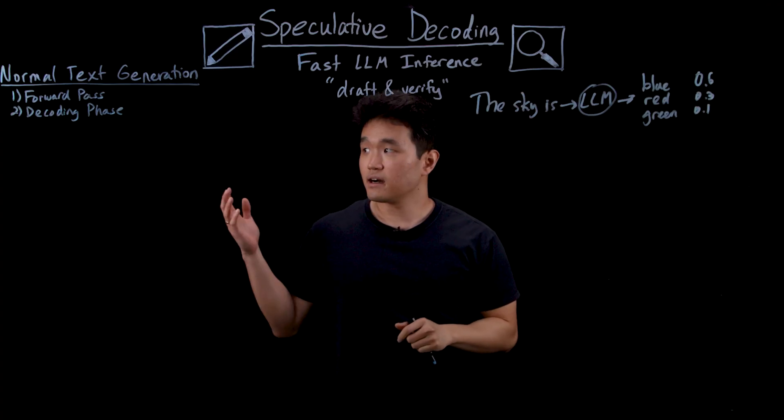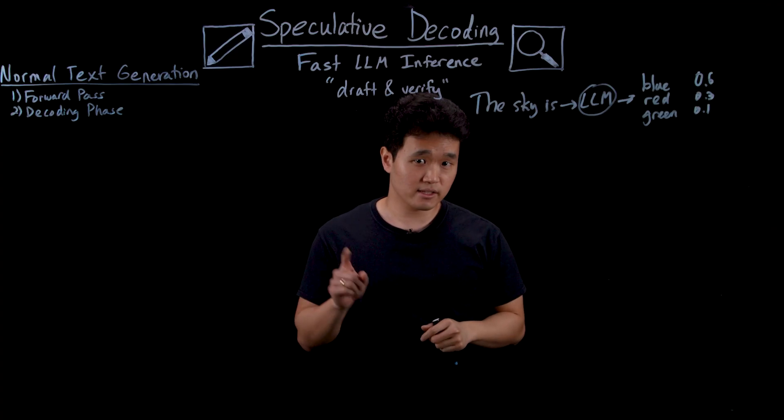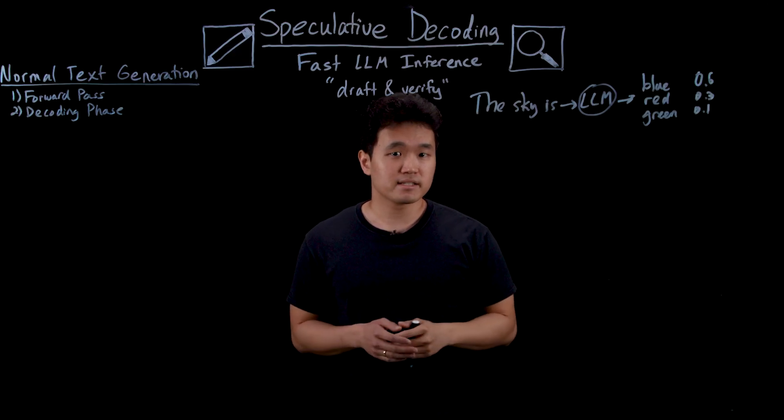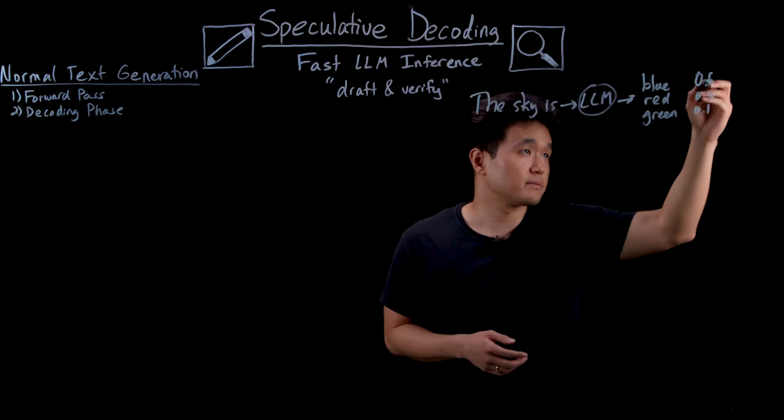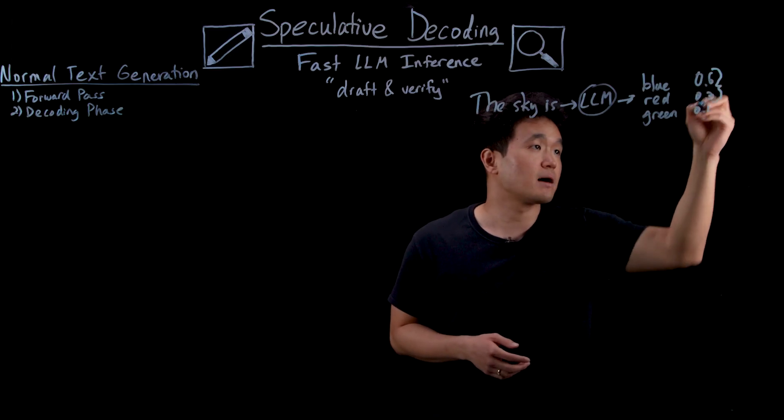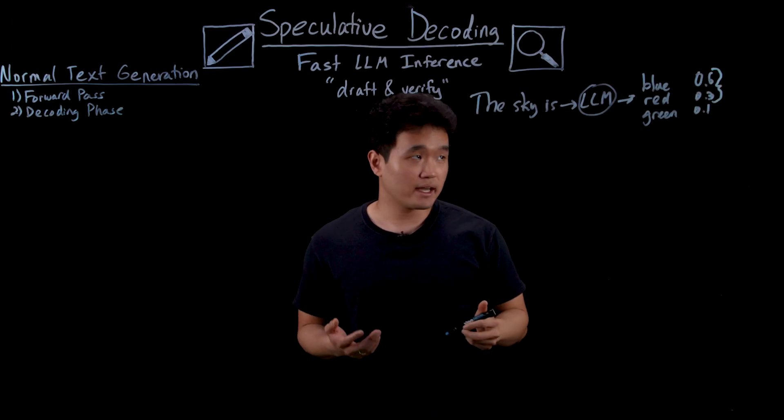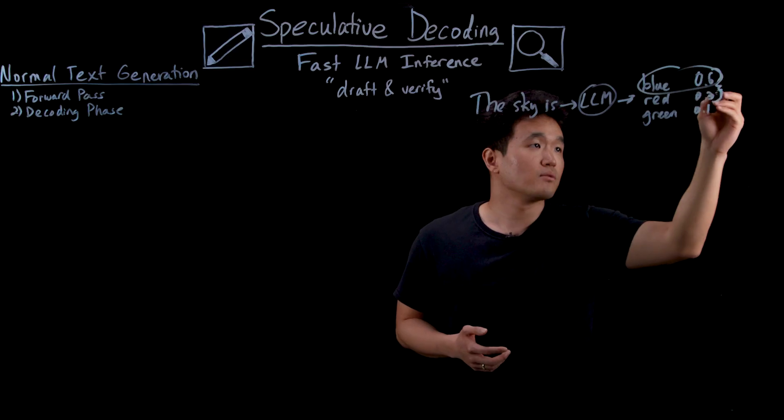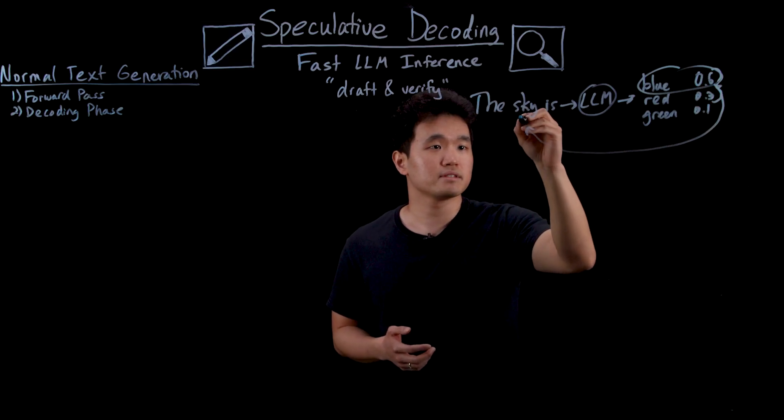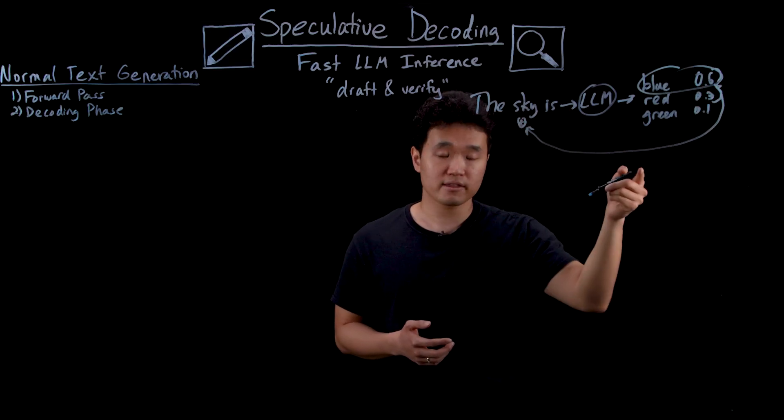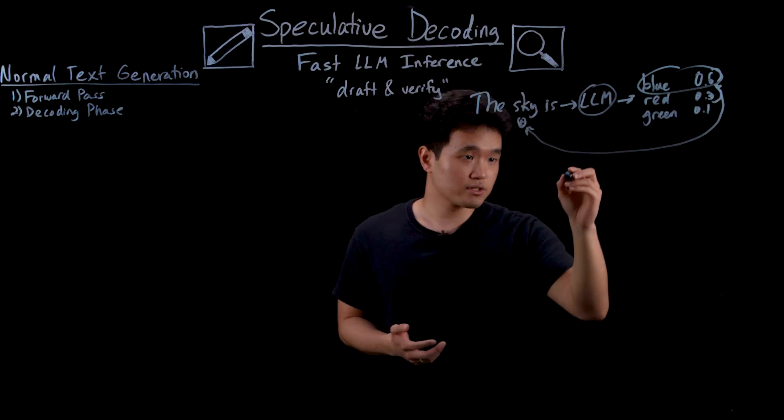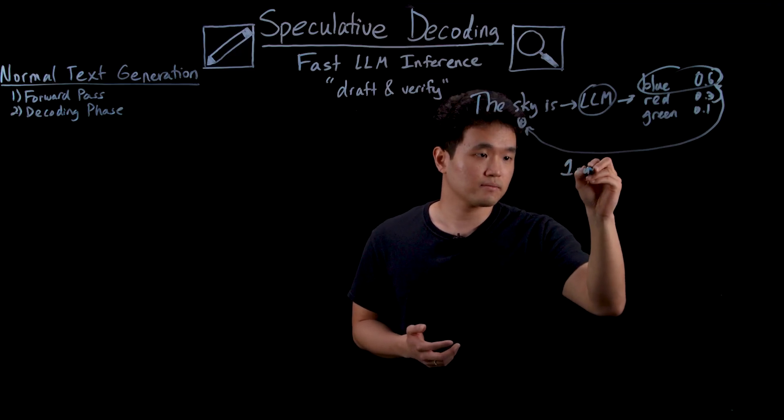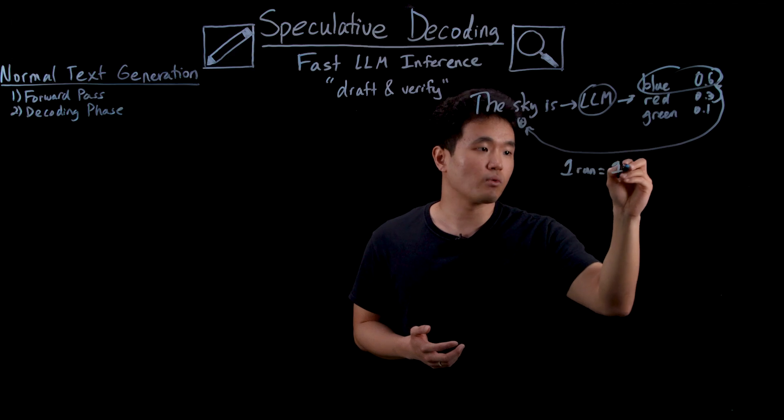During the decoding phase, we select one single token. This can be done by just selecting the token with the highest probability or by randomly sampling from a subset of the top probabilities. Either way, once we've selected a token, we can append it to our input sequence and then pass it back through the LLM to get the next token. As you can see with this approach, one run of the model is able to generate just one token.